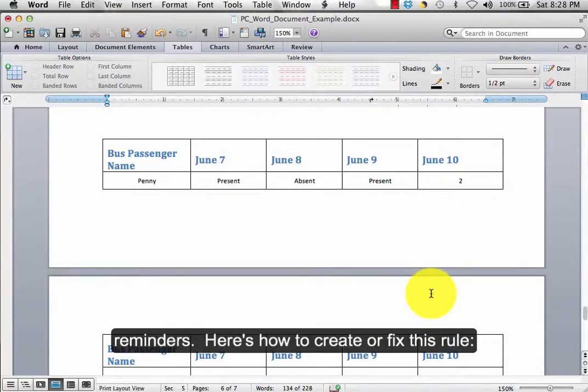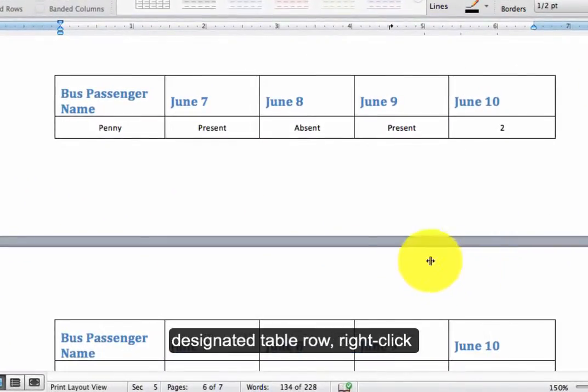Here's how to create or fix this rule. If a table extends beyond one page, highlight the designated header row.